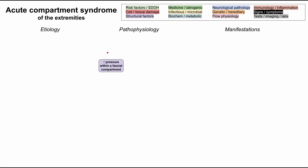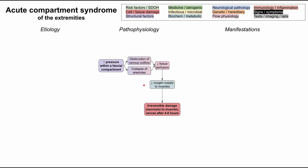At the center of the pathophysiology for acute compartment syndrome is increased pressure within a fascial compartment. You have fascial compartments in all of your extremities, and when pressure gets too high, there are two downstream effects: you obstruct the venous outflow and collapse the arterioles entering that compartment. This creates stagnant blood, decreasing tissue perfusion and oxygen supply to the muscles. After about four to six hours, you can have irreversible damage — ischemia and necrosis — to the muscles and nerves inside that compartment.